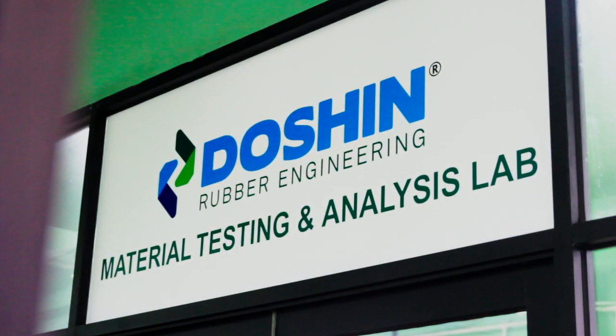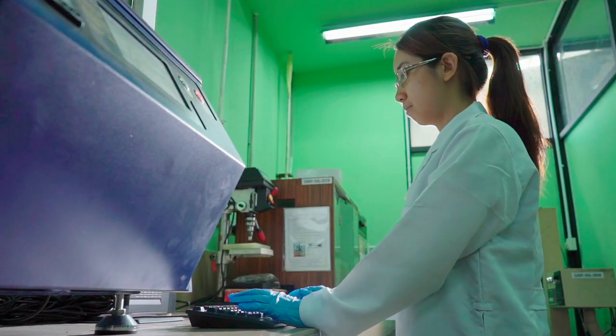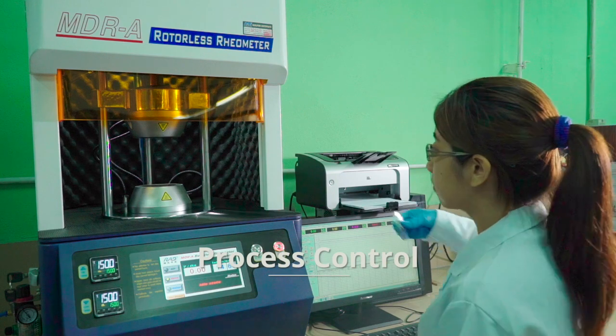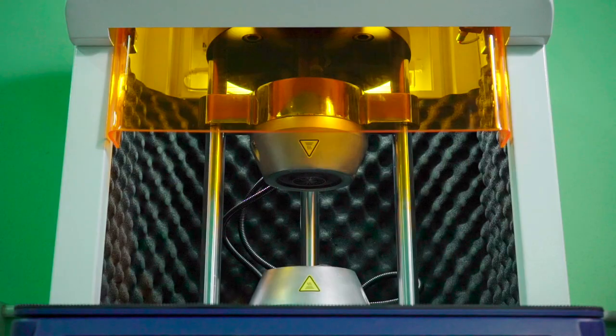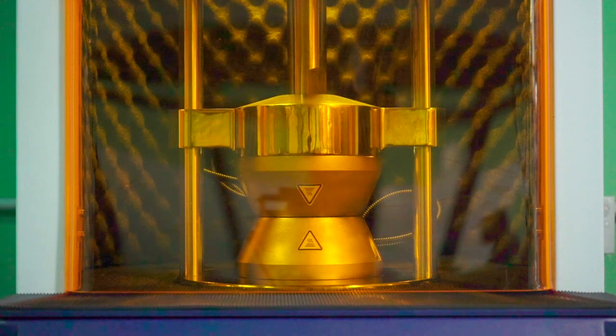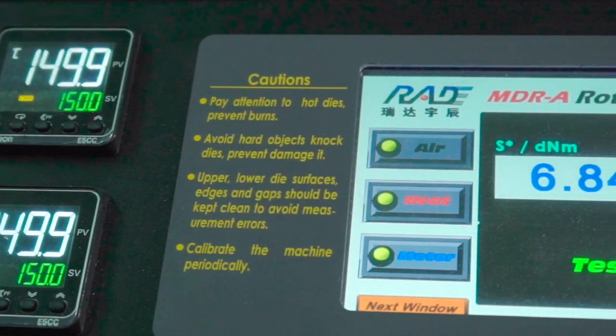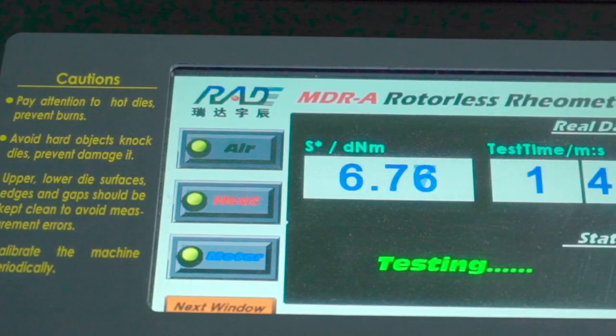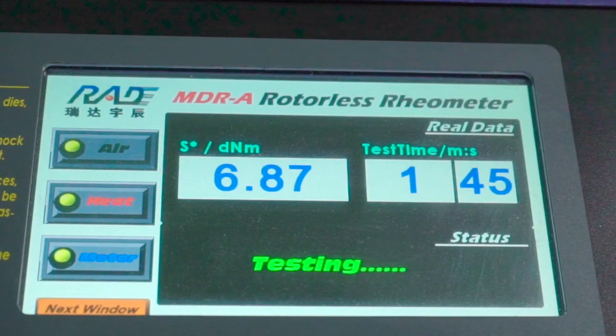In addition to Doshin's stringent quality control measures, Doshin's material testing and analysis lab employs testing at various steps along our manufacturing process. This continuously verifies all parameters to meet particular compound specifications at every order.